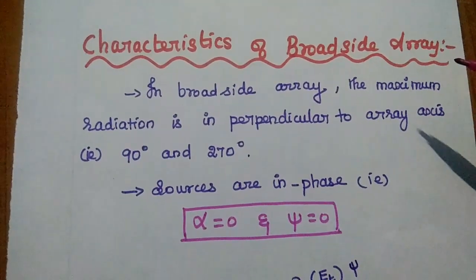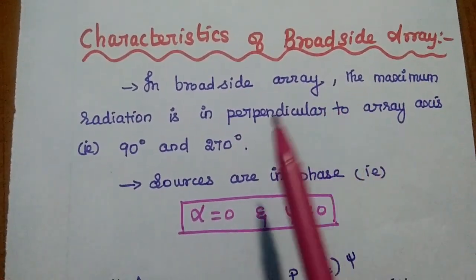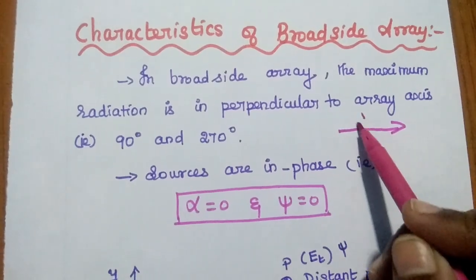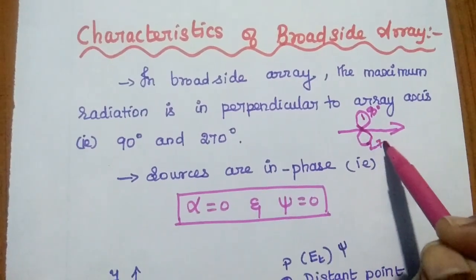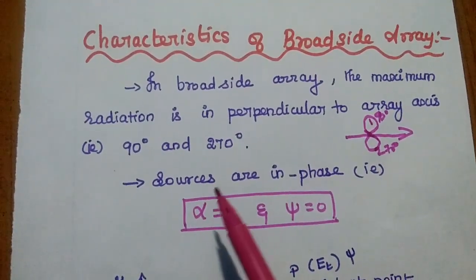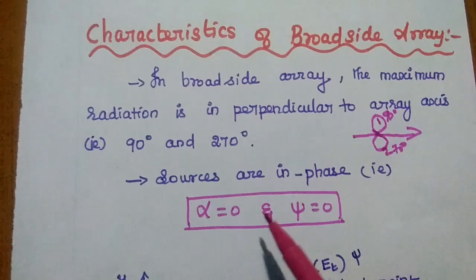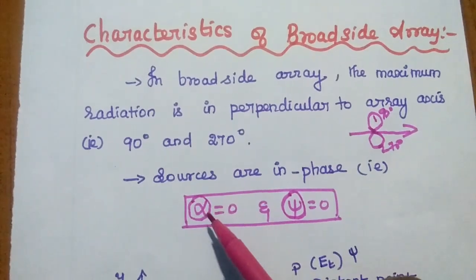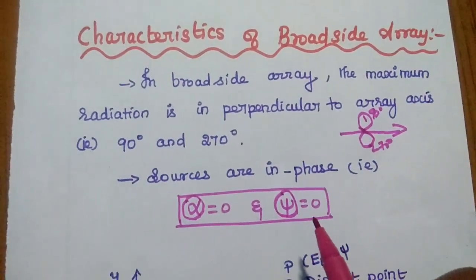Now we analyze the characteristics of the broadside array. The maximum radiation is perpendicular to the array axis, which means it occurs at 90° and 270°. The sources are in phase, meaning elements are fed with equal currents with no phase difference. Since ψ is the total phase difference and α is the phase difference between adjacent point sources, both become zero in a broadside array.